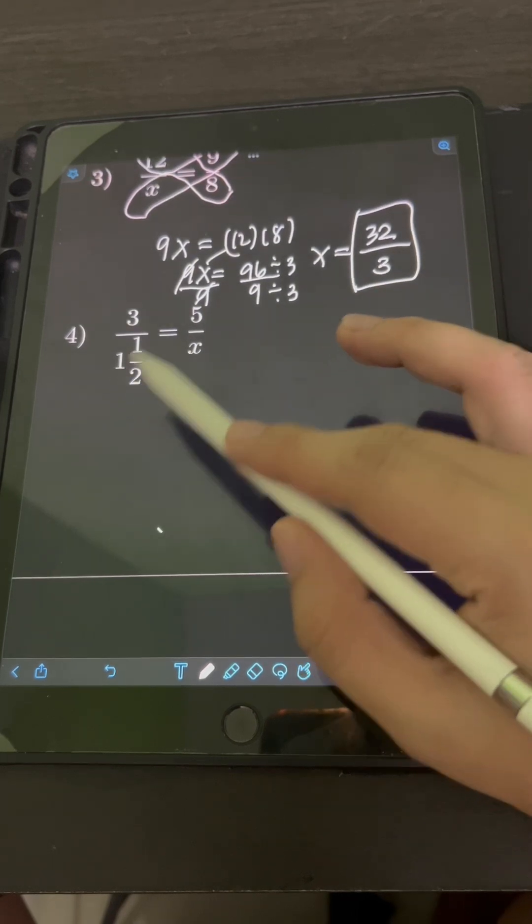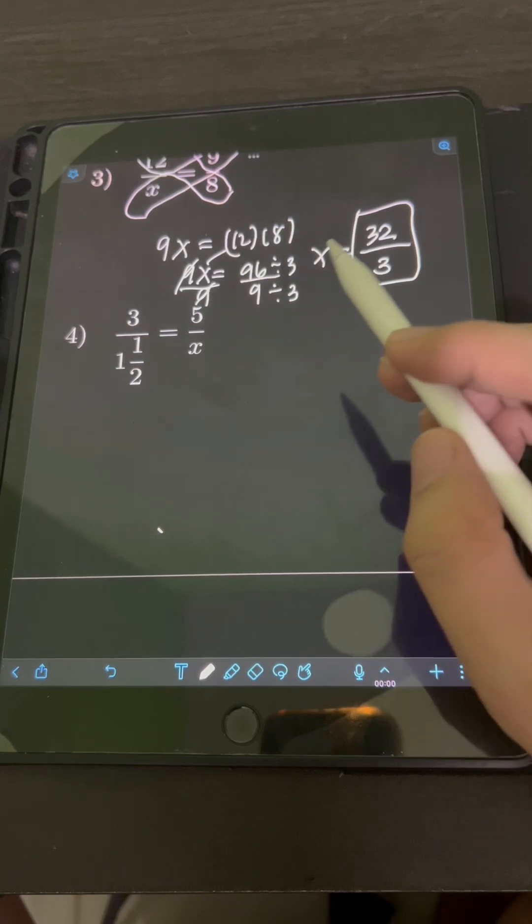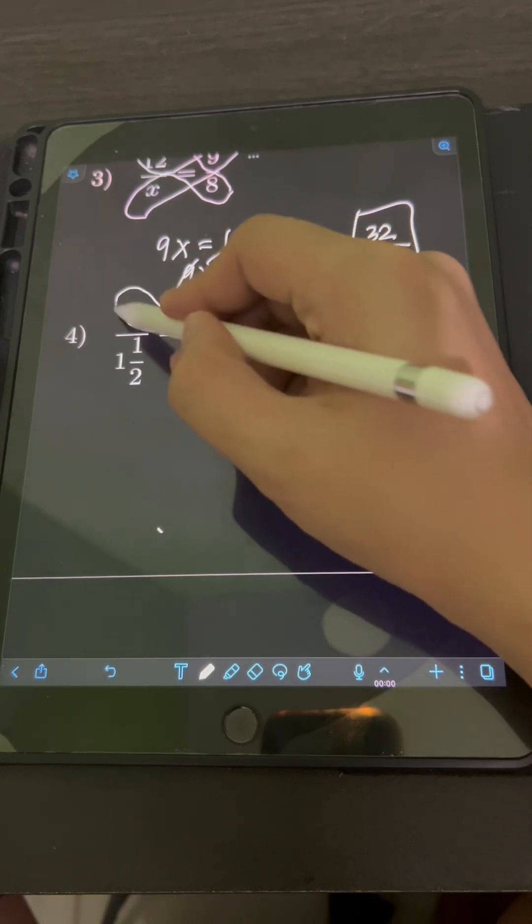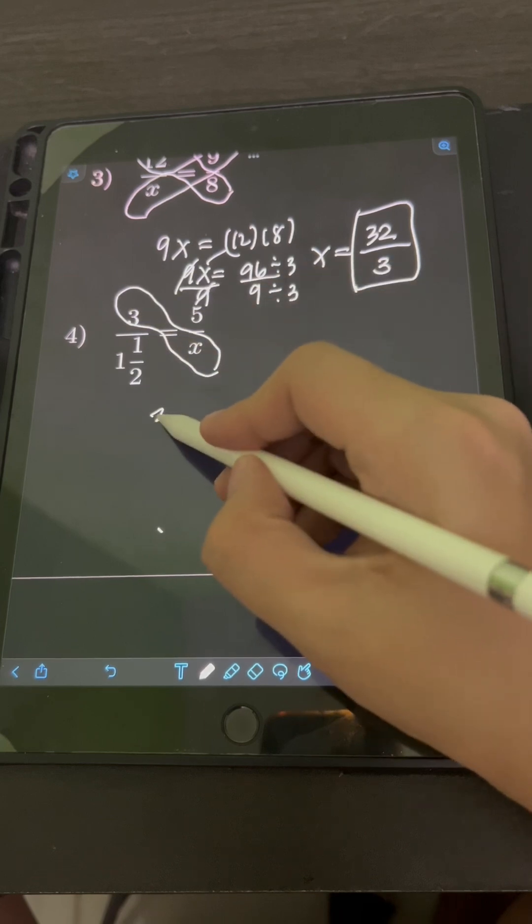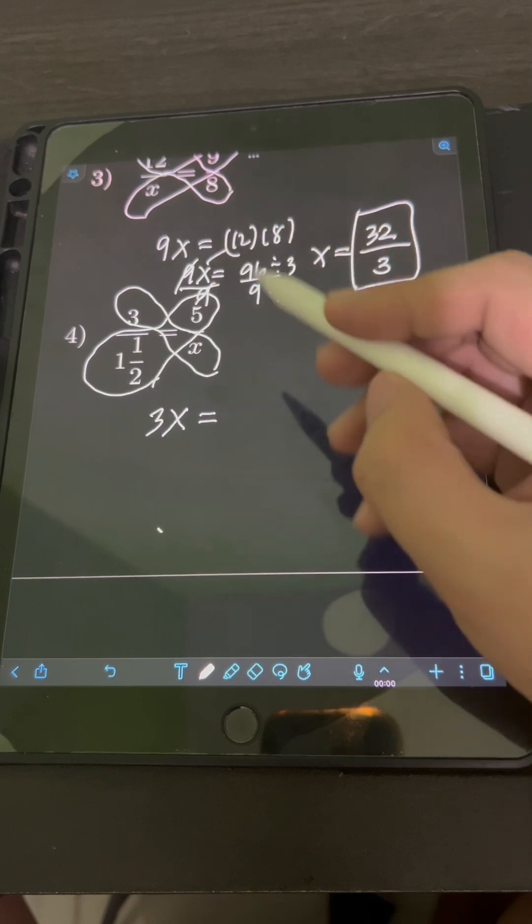Next, for number 4, we have 3 over 1 and 1 half equal to 5 over x. So applying cross multiplication. So let's equate the product of 3 and x or 3x equated to the product of 5 and 1 and 1 half.